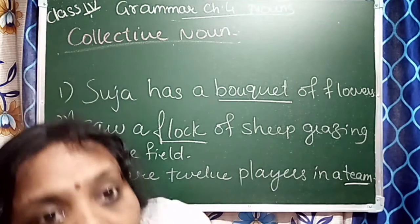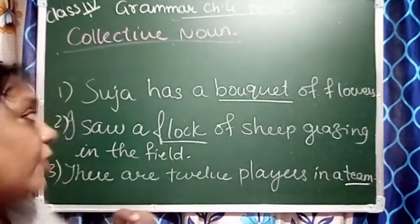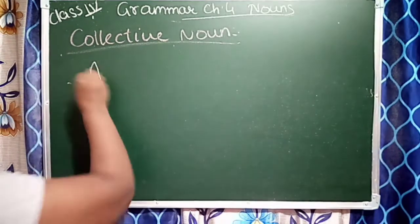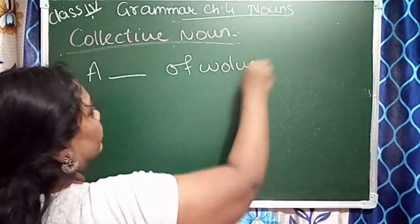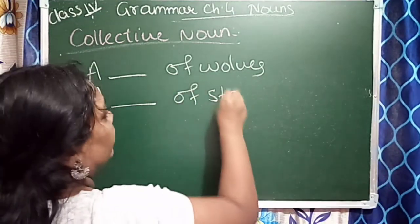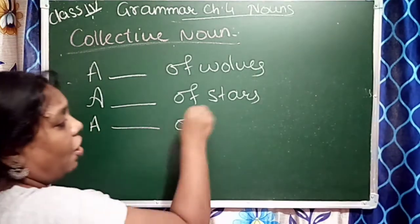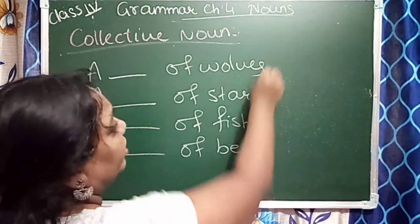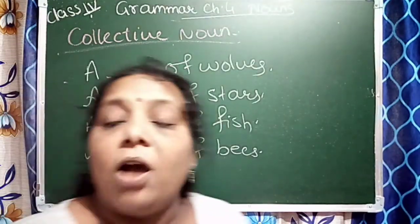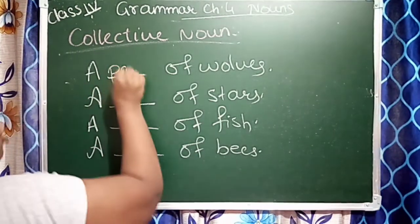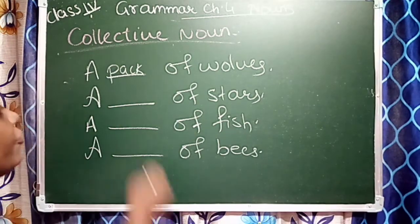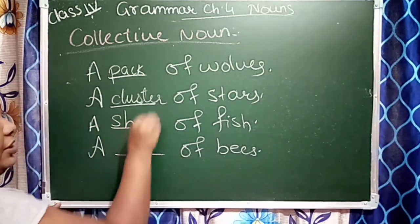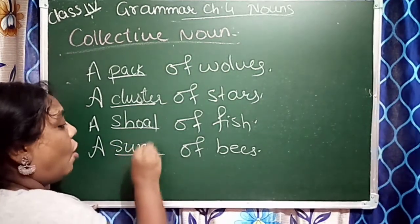Now I have a second exercise for collective nouns. A dash of wolves — the answer is a pack of wolves. A dash of stars — a cluster of stars. A dash of fish — a group of fish or a shoal of fish. A dash of bees — a swarm of bees.